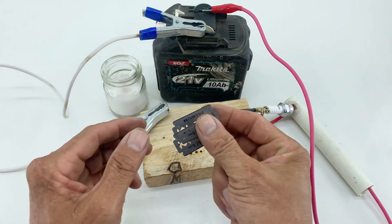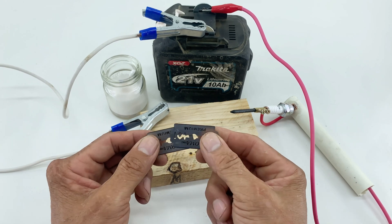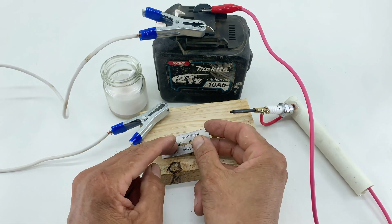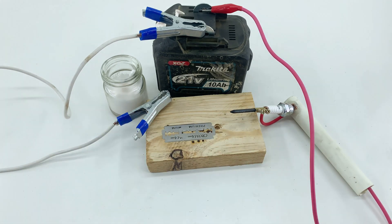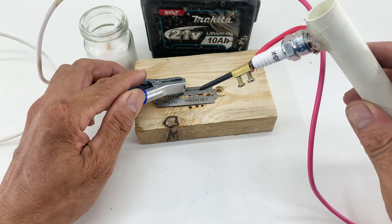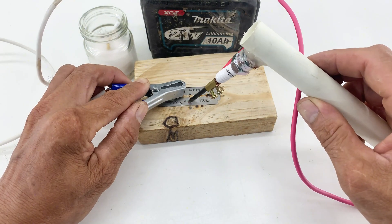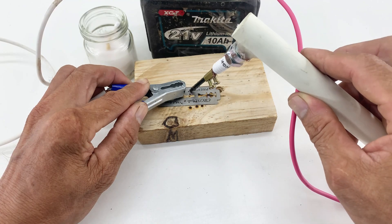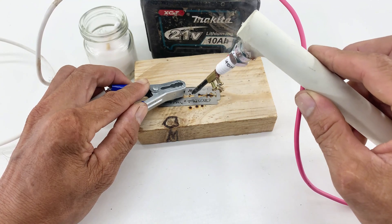I've placed two razor blades on this wooden block. Watch what happens when I touch our homemade soldering iron to it. See how it instantly heats up, creating sparks and melting the metal? It's incredibly effective.